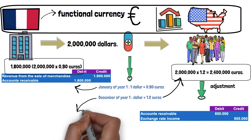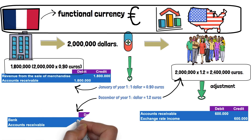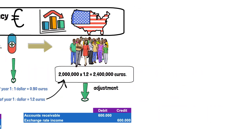After this, it will be necessary to de-recognize the account receivable and recognize the cash entry. Now let's see another example where there are currency transactions and a change in the fair value of an asset.